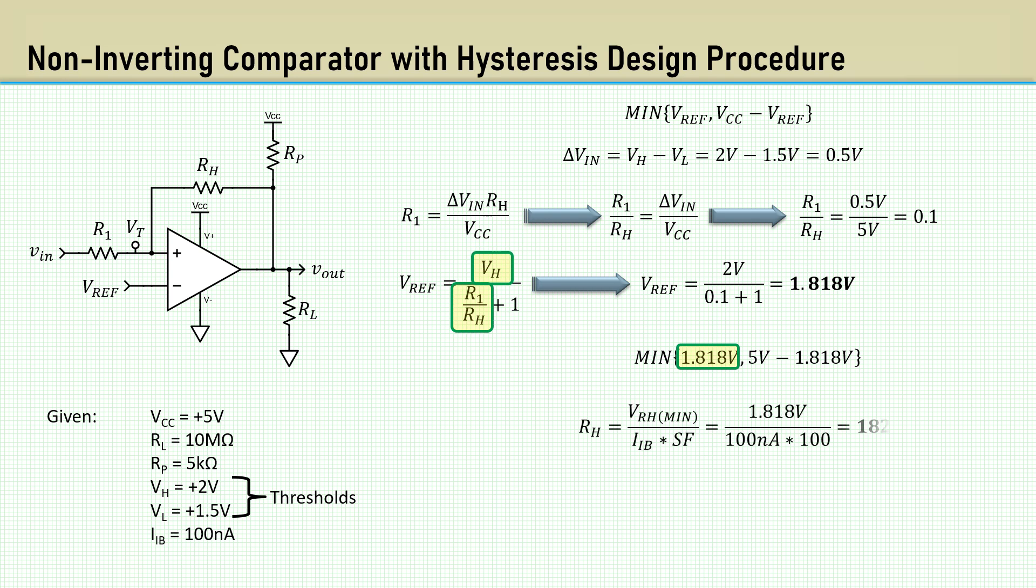The minimum voltage across RH is the Vref at 1.818 volts. Then calculate RH using the scaling factor of 100 on the input bias current of 100 nanoamps. That comes out to 182k. The equation for R1 yields 18.2k.